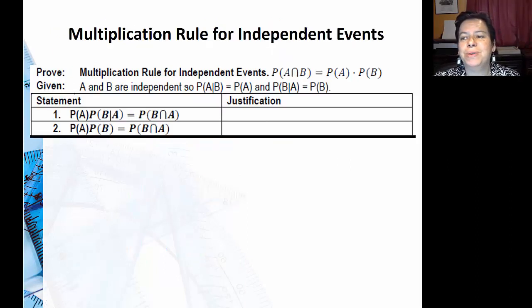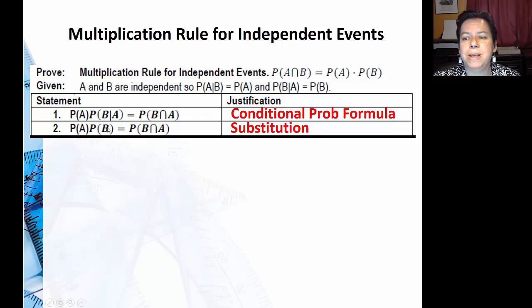Last but not least, let's look at the multiplication rule for independent events. We kind of deduced it from using inductive reasoning. We saw the pattern and we know the probability of A times probability of B given A is probability of B and A. That's the conditional probability formula from last time. We just substitute it in. So we know that if it's independent, probability of B given A is just the probability of B.